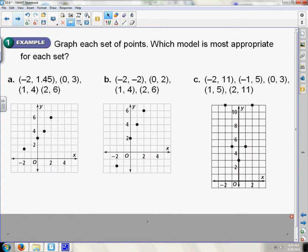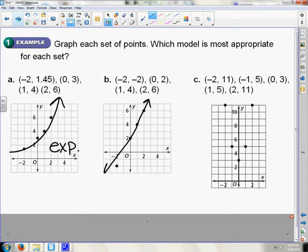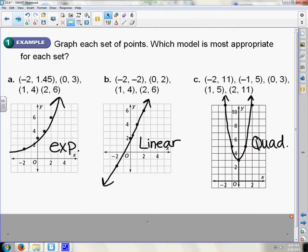So, graph each set of points. Which model is most appropriate for each set? If you look at this, they've given you four points. This is pretty simple. This one, you can tell right off the bat, is an exponential function. This is linear. And here is quadratic. If I give you a set of points, you should be able to do this fairly simply.